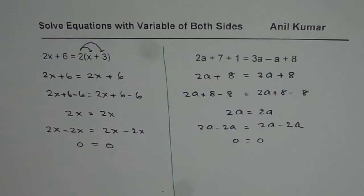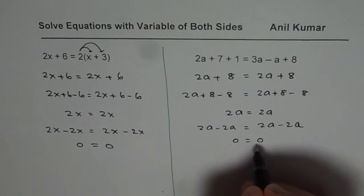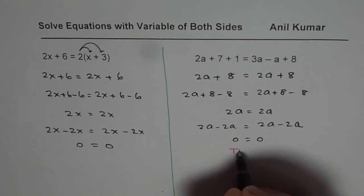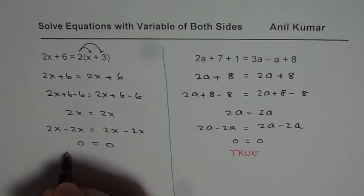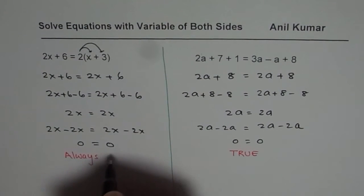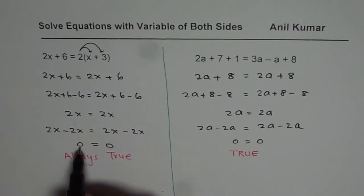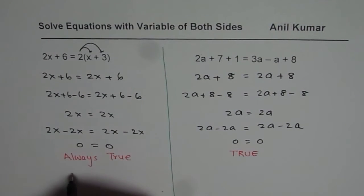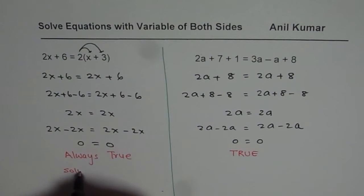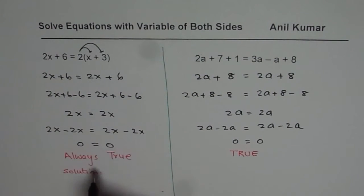How do we interpret this kind of solution for an equation? We end up with 0 equals to 0. Is that true? Yes, it is always true — 0 is indeed equal to 0. So what we get in this equation is that the left side is always equal to the right side. Therefore, what should the solution be? The solution is that x could be any number — we have infinite solutions.